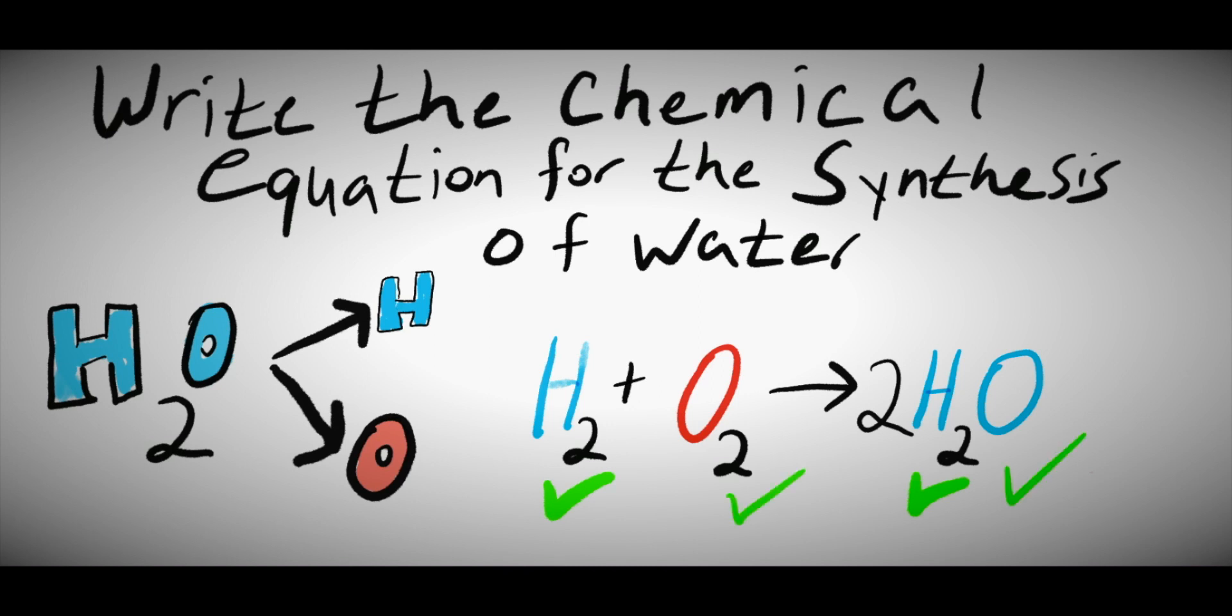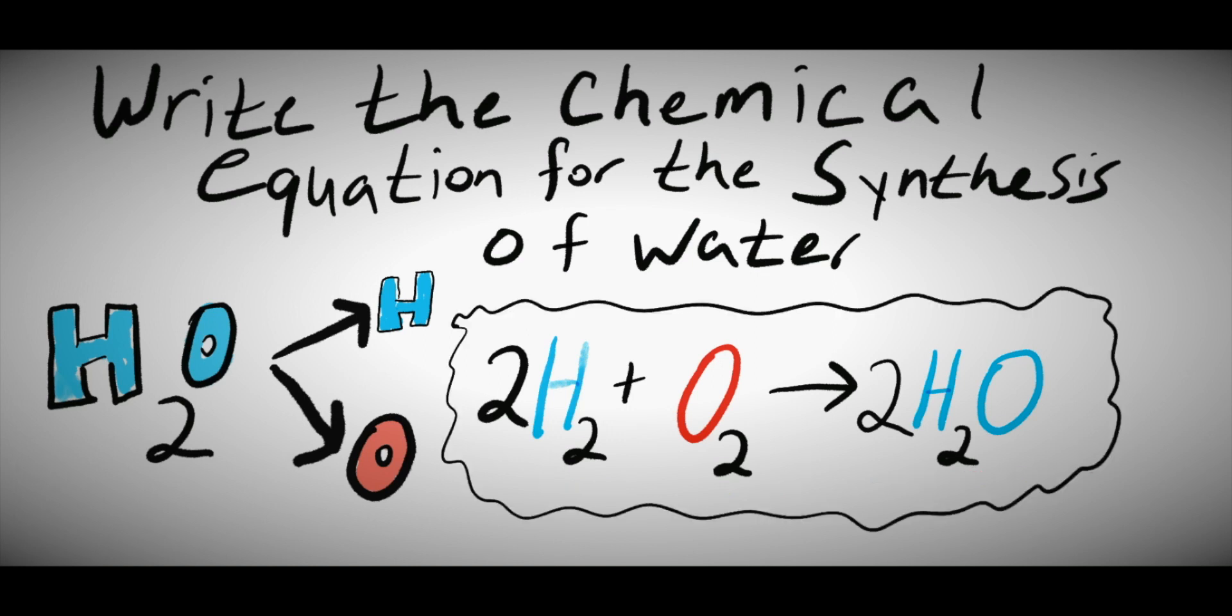This gives me two oxygens on both sides, but now I have four hydrogens on my product side and only two on my reactant side. In order to fix this, I am going to have to add a 2 as a coefficient in front of my hydrogen atom on the reactant side. Now, we have four hydrogens on both sides and two oxygens on both sides. So, this means that we are balanced.